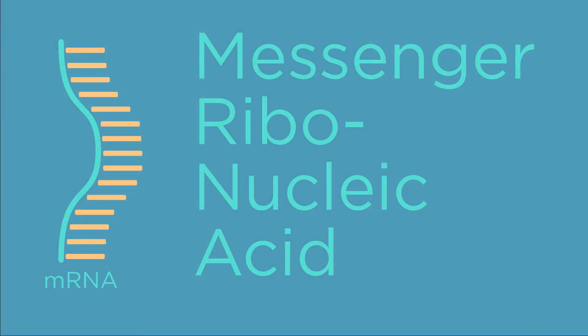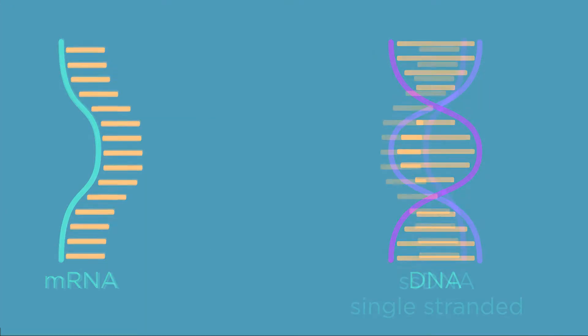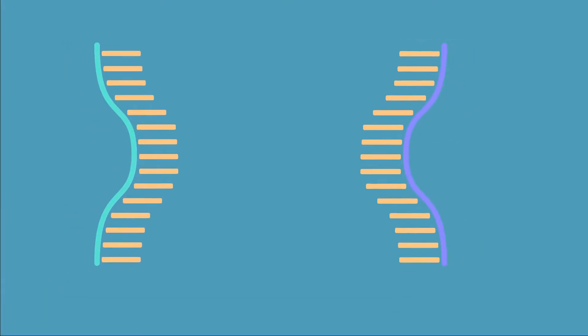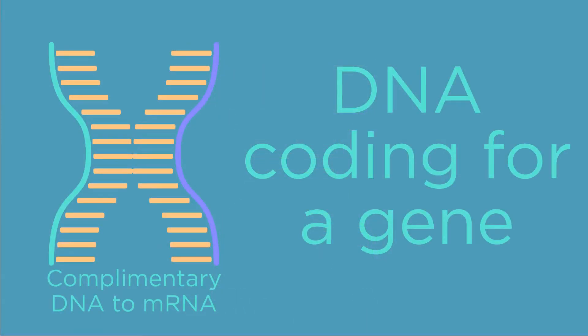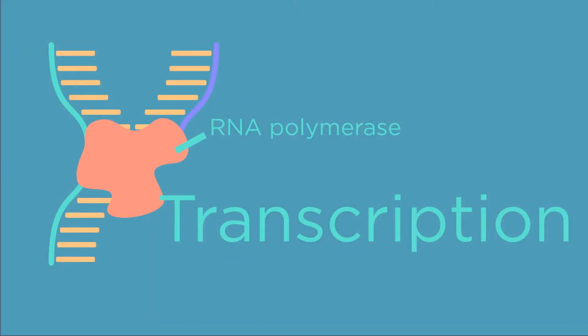mRNA is messenger ribonucleic acid, and generally it associates with a strand of DNA and is coding for a gene. A gene in this case is coding for a particular protein. That's not to say that all genes code for proteins, but the ones that are translated to mRNA do.